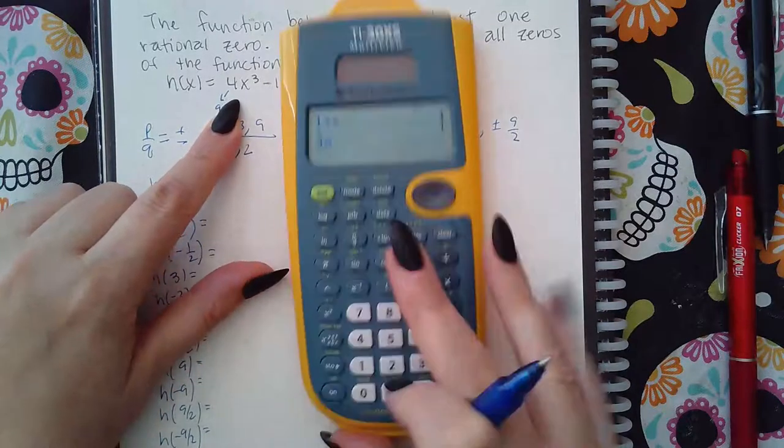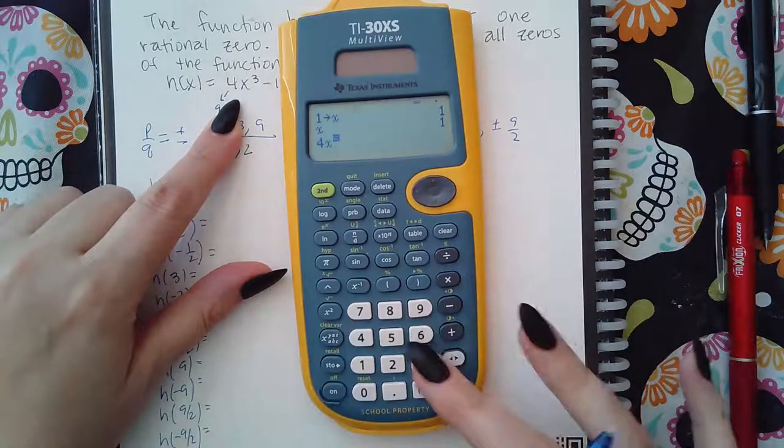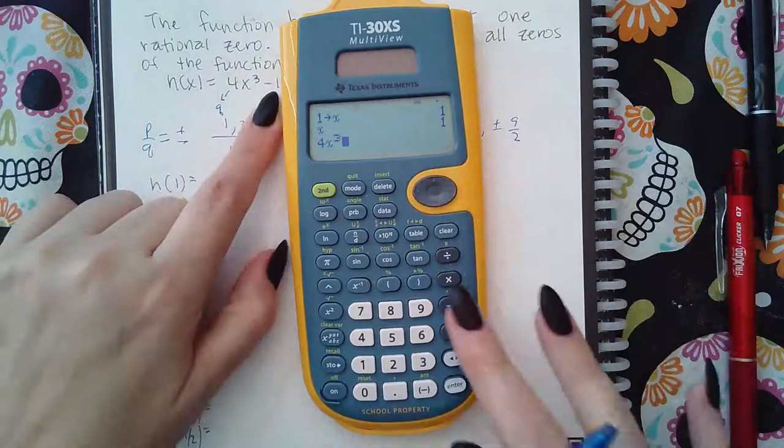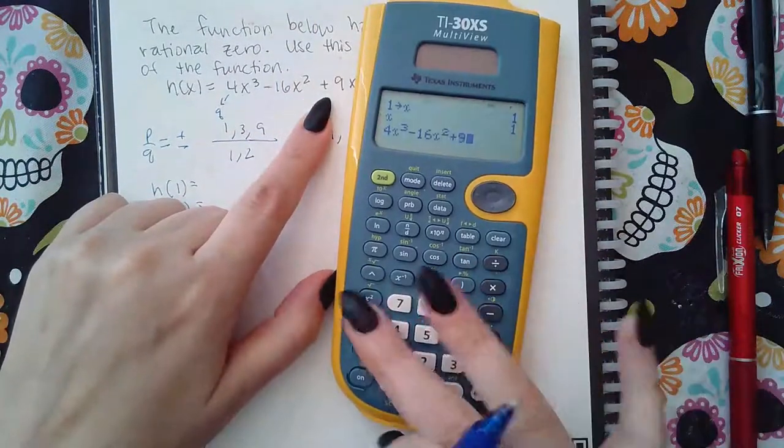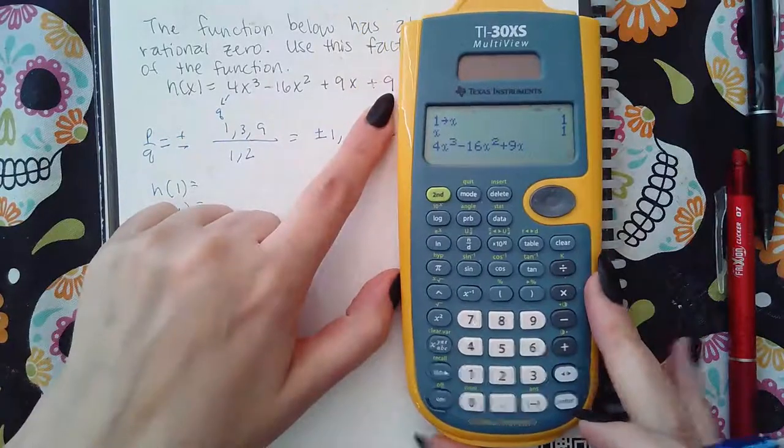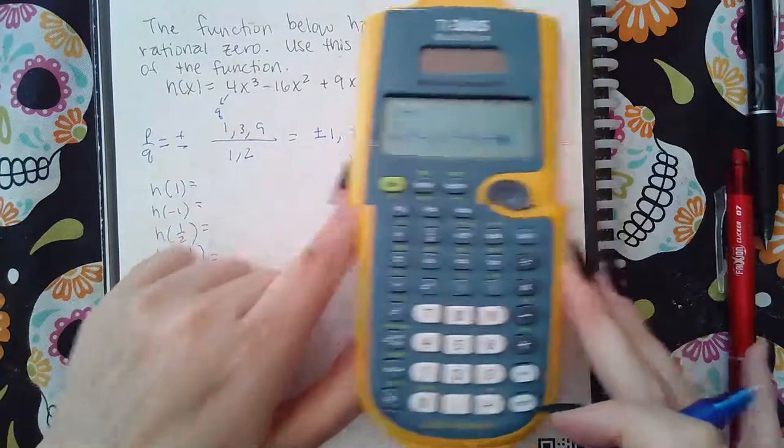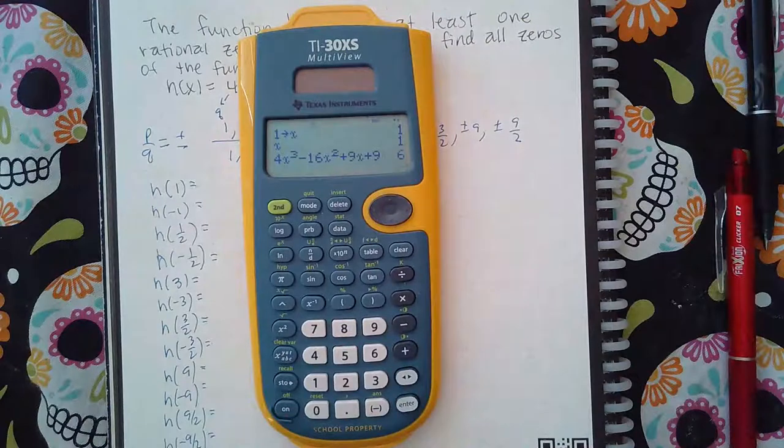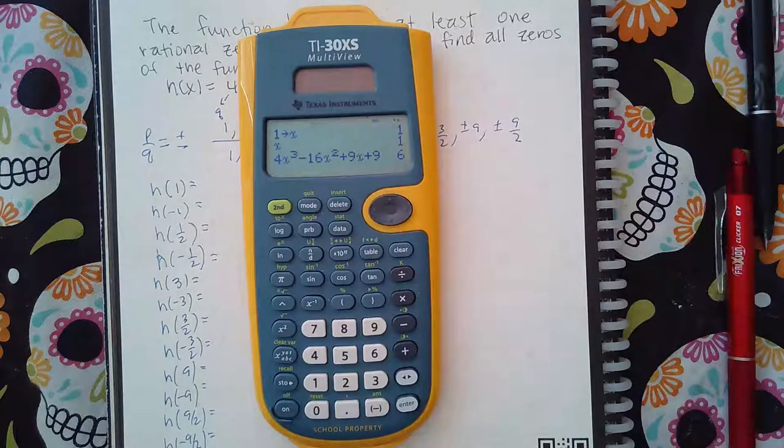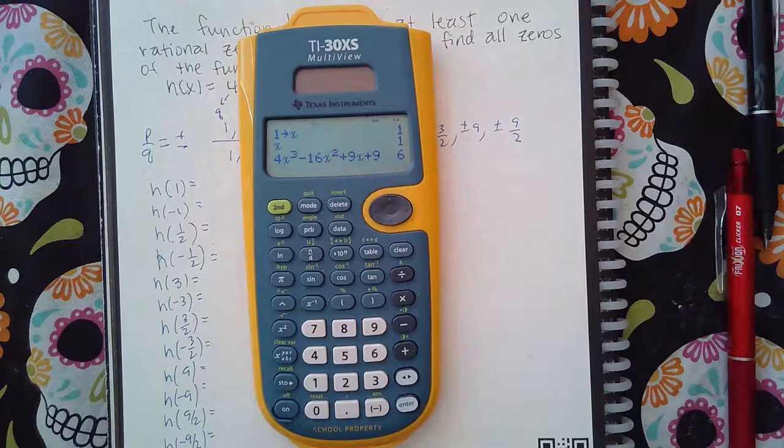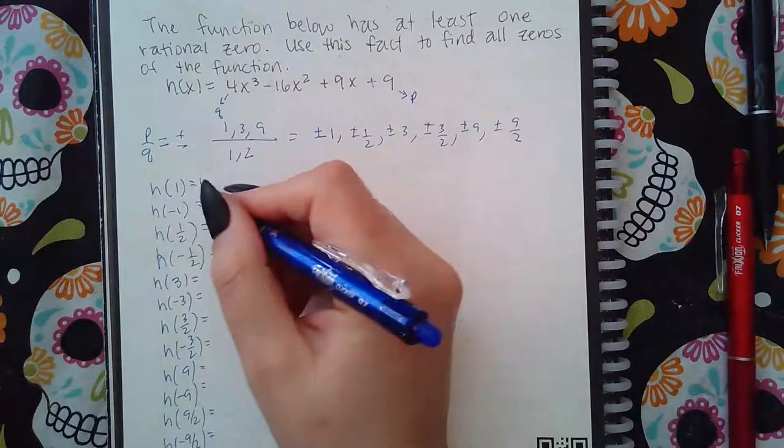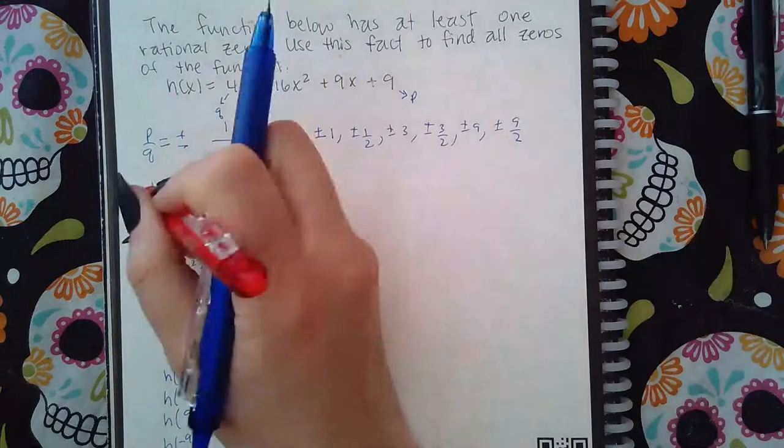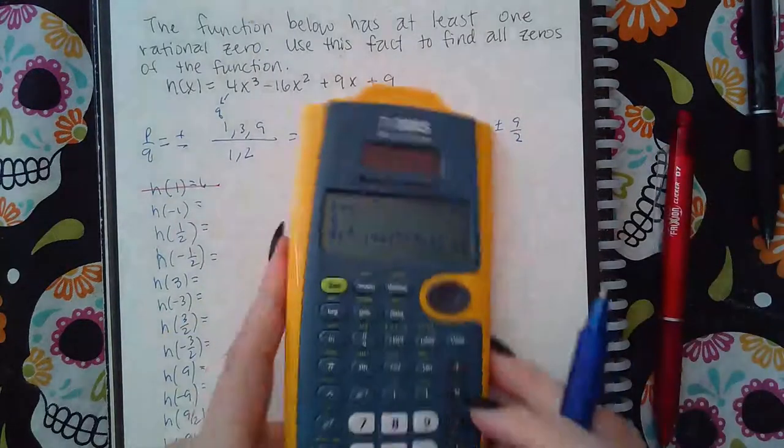So 4X raised to the third minus 16X squared plus 9X plus 9. And we go from there. So we get 6. So this equals 6. But that is not zero. 1 is not going to work in the synthetic division.